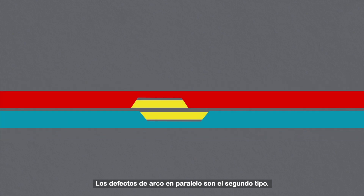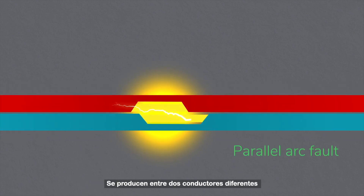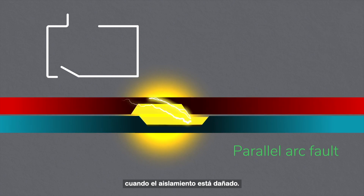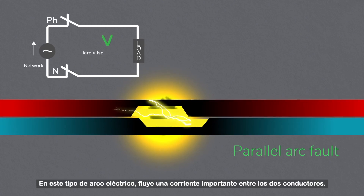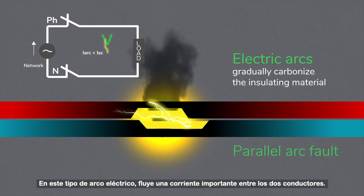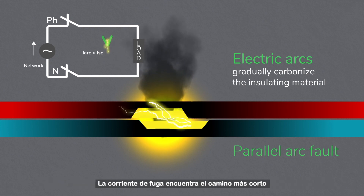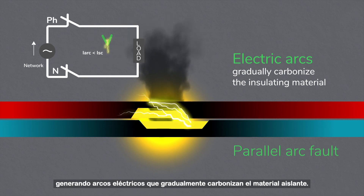Parallel arc faults are the second type. These happen between two different conductors when the insulation is damaged. In this type of electric arc, substantial current flows between the two conductors. The leakage current finds the shortest path by generating electric arcs that gradually carbonize the insulating material.